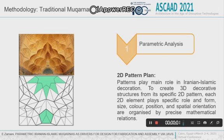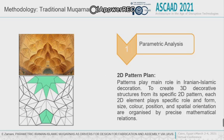The 2D pattern plan, or 2D PP, plays the main role in designing Mogharnas. Each of these 2D units you can see in the picture plays a specific role in constructing a 3D element. In traditional methods, usually the size, height, rotation, and sometimes even the color of each 3D element are specified by its unique 2D element.